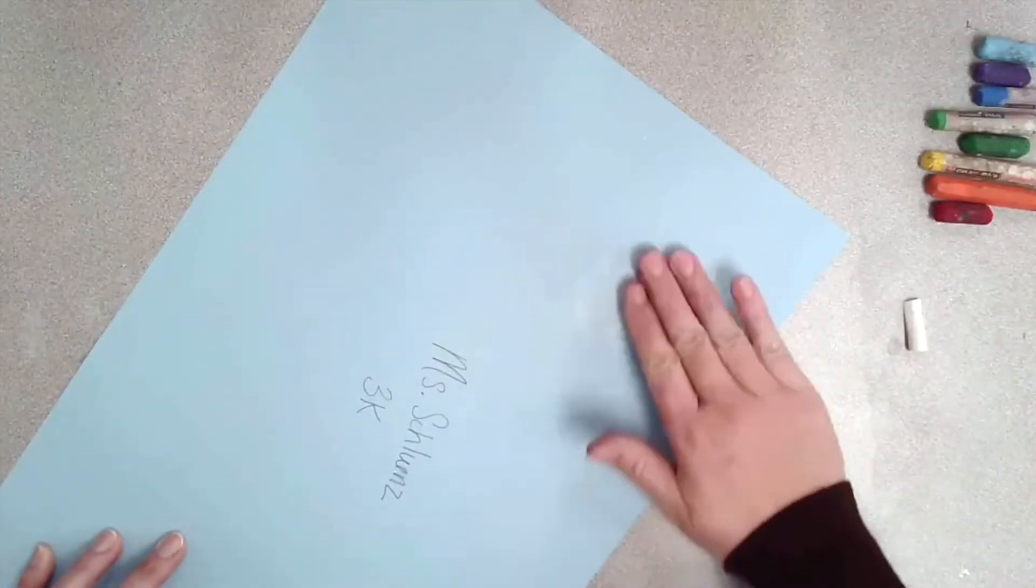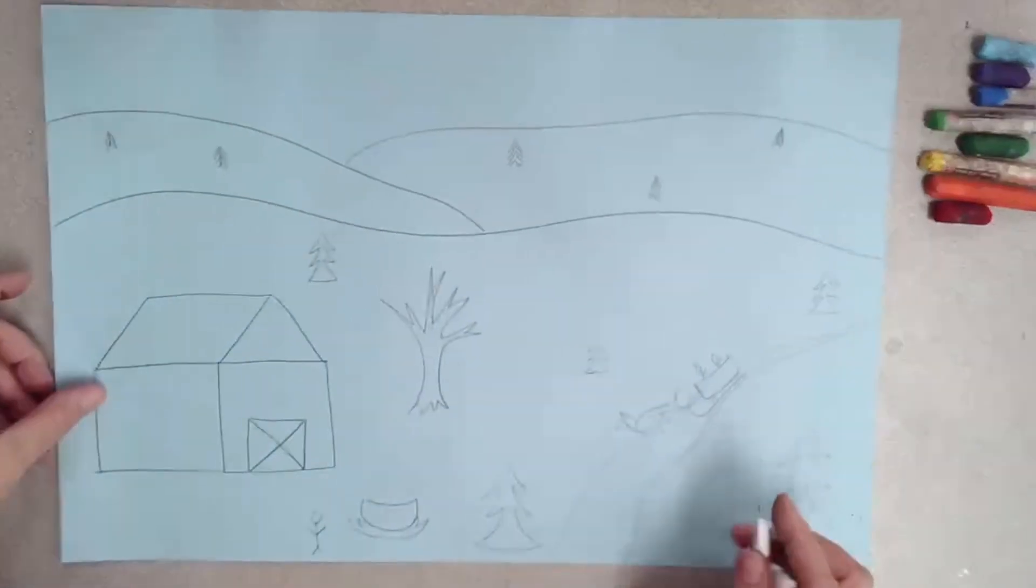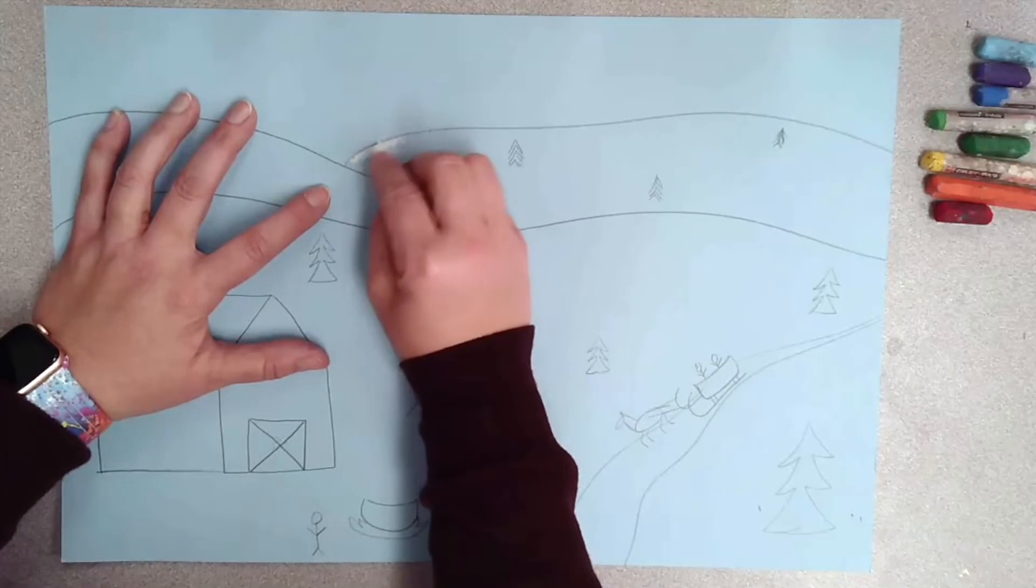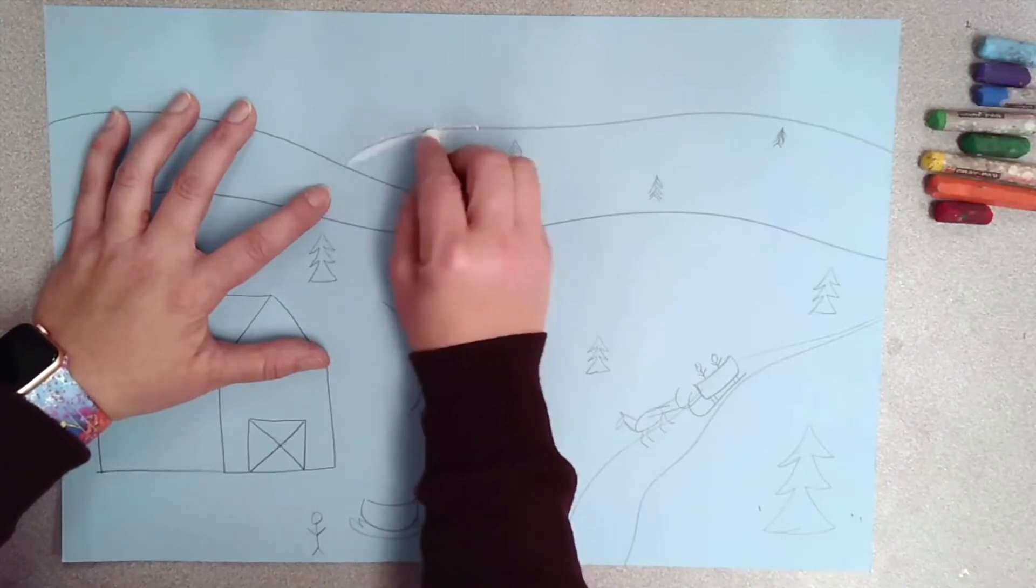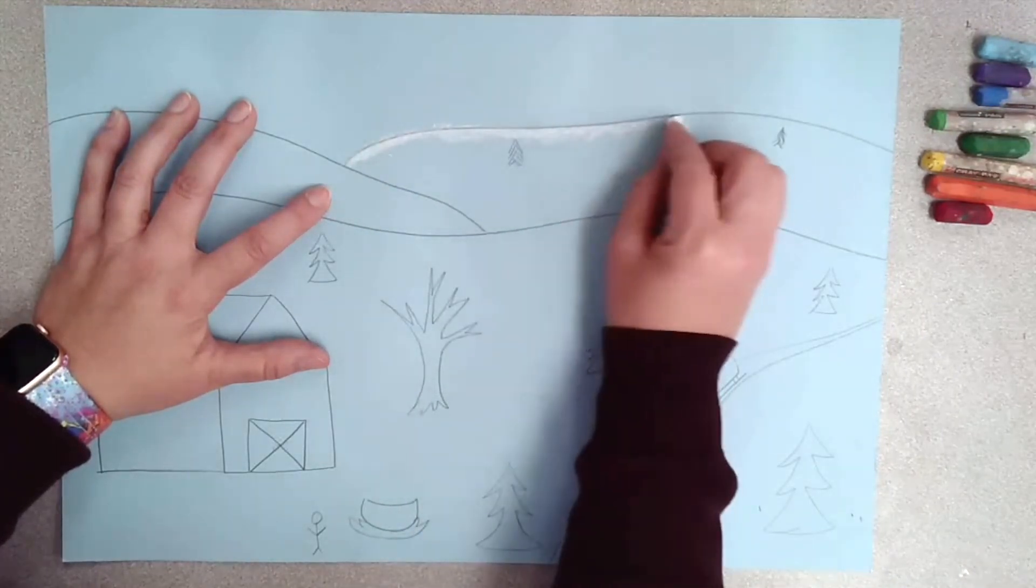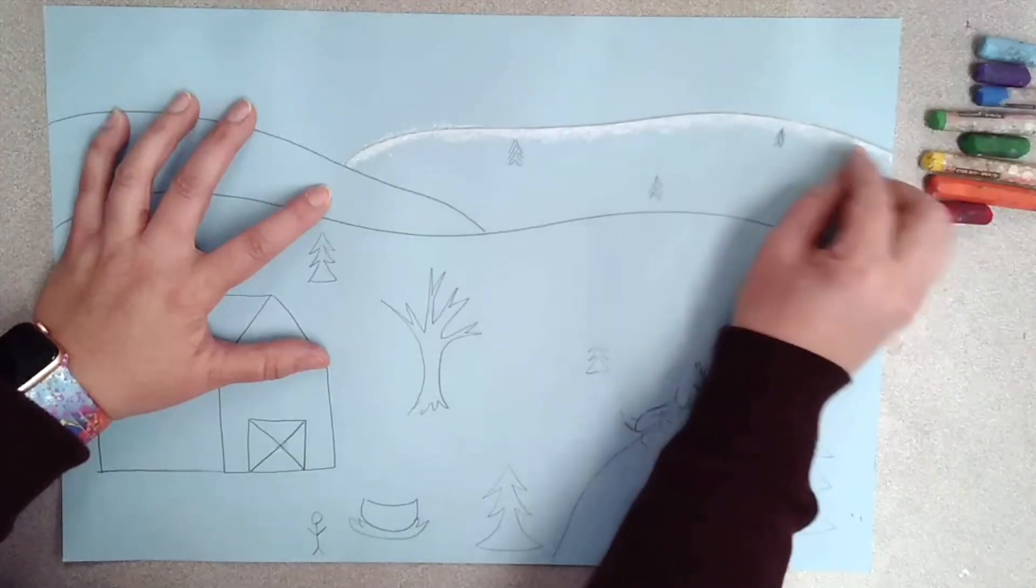Once you're done drawing your picture, you're going to get a piece of chalk and use the side of the chalk to make your fluffy snow. Start at the top, and at the very very top where the hill first goes over the peak, you're going to draw very heavily with the chalk.